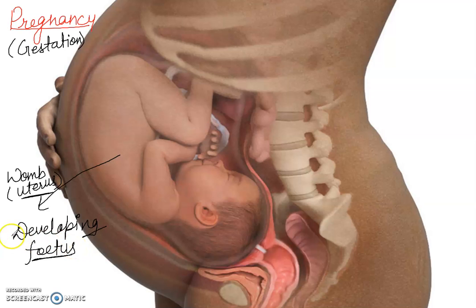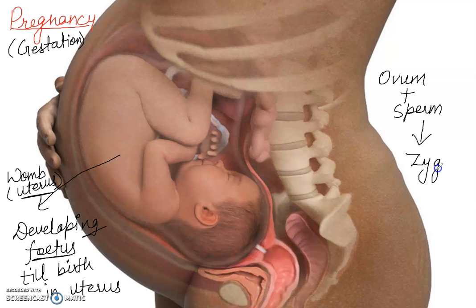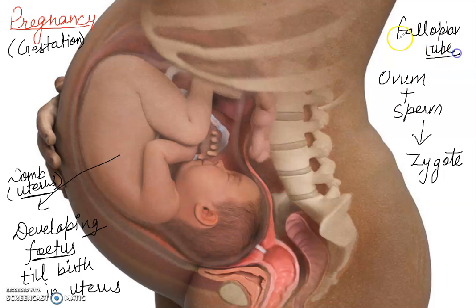The fetus remains inside the uterus till birth. Pregnancy begins with conception — that is the fertilization of the ovum by sperm. When the sperm fuses with the ovum it forms a zygote; this process is known as fertilization, and it occurs in the fallopian tube. I have posted a separate video on this fertilization topic — if you haven't watched that video you can go to my previous video.